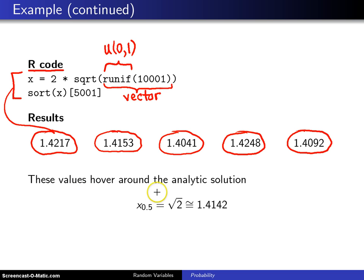Now, the analytic solution from the previous page was the square root of 2, which is 1.4142, and notice that this is slightly above that. This is just barely above it. This is below it. This is above it, and this is below it. So, you have them hovering around the analytic solution,